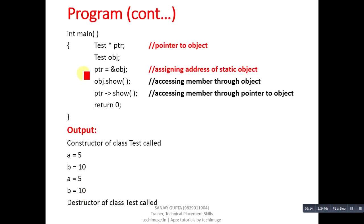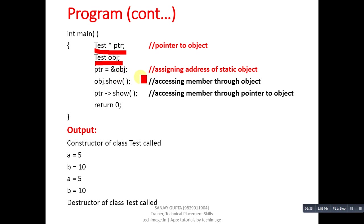Inside main, a pointer 'ptr' of type test is created, and an object 'obj' of type test is also created. The address of obj is assigned into ptr. So ptr is a pointer receiving the address of the static object. We call obj.show() to invoke the show method, and we can also call show through the pointer using the arrow notation ptr->show().